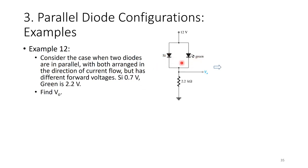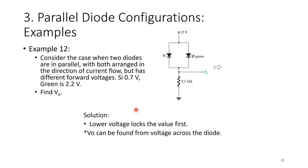Which diode turns on first? The lower voltage locks the value first. The silicon diode turns on at 0.7 volts and locks the voltage there. The green LED then also has 0.7 volts across it, but since 0.7 V is not enough to reach its 2.2 V forward voltage, the green LED remains off.